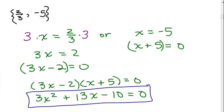To get rid of the fractions, we multiply both sides by 3 to get 3x = 2. And then we set that equal to 0 and used it for one of the factors. For x = -5, we just added 5 to get one of the factors, then we multiplied it out. So we found an equation without any fractions where 2/3 and -5 were solutions.